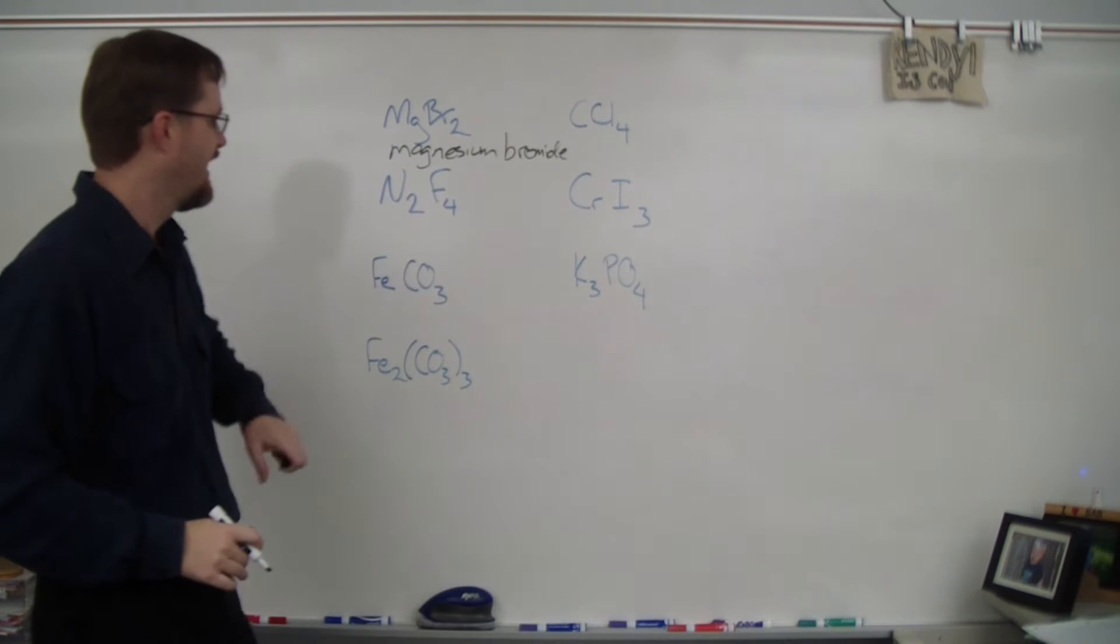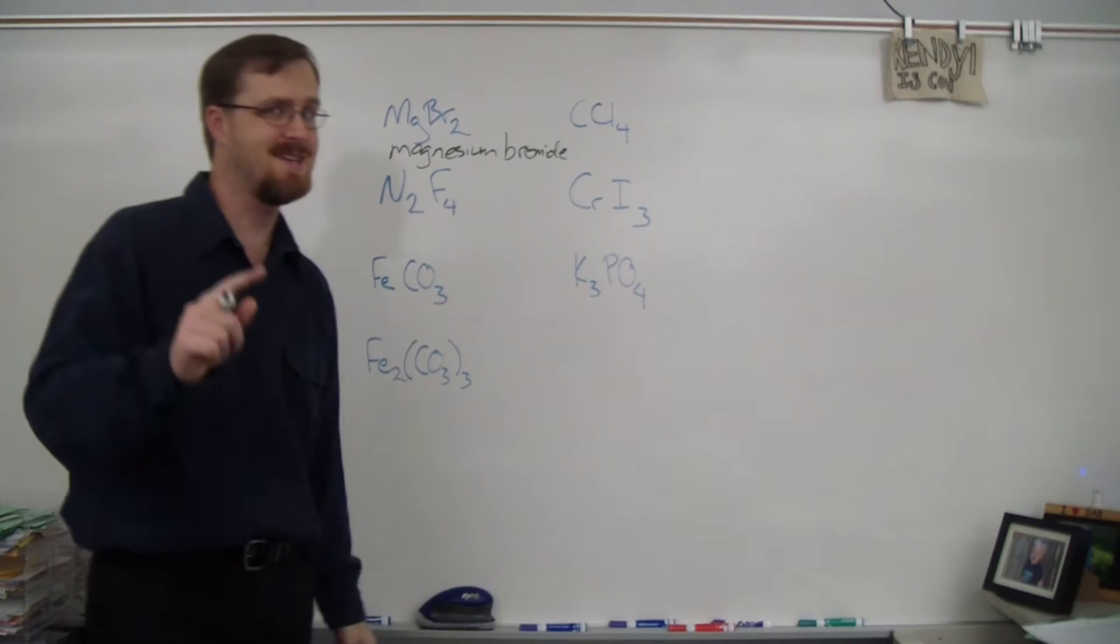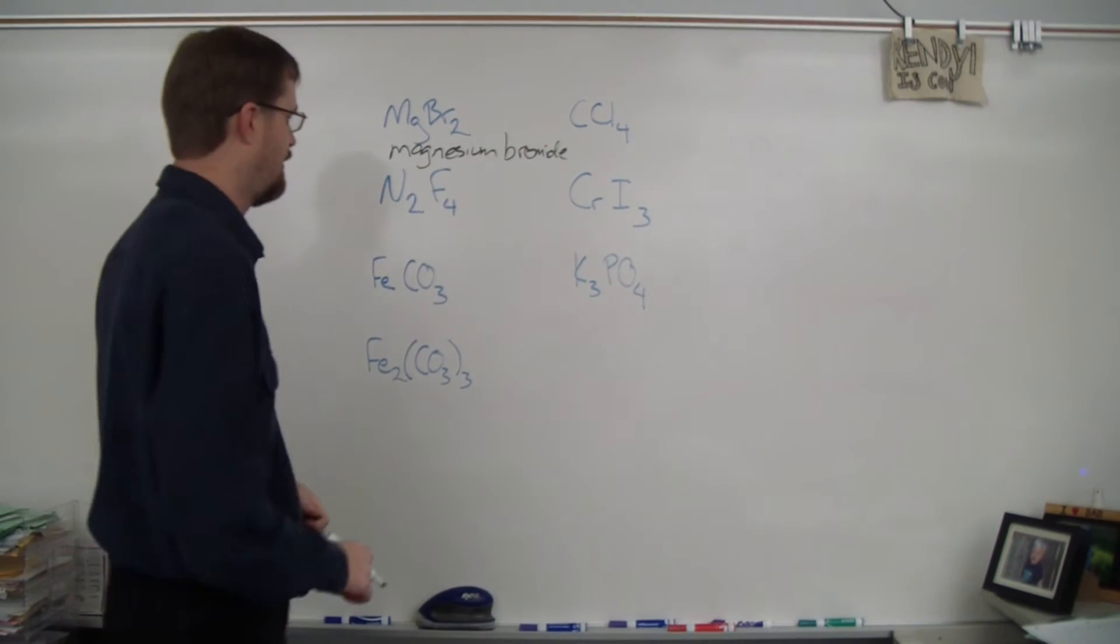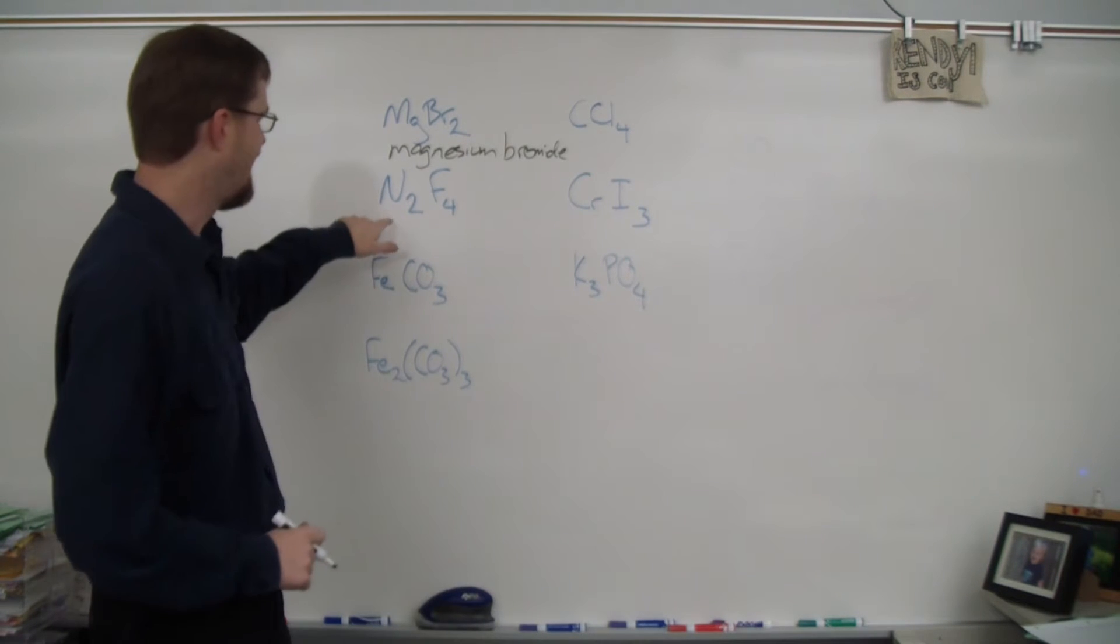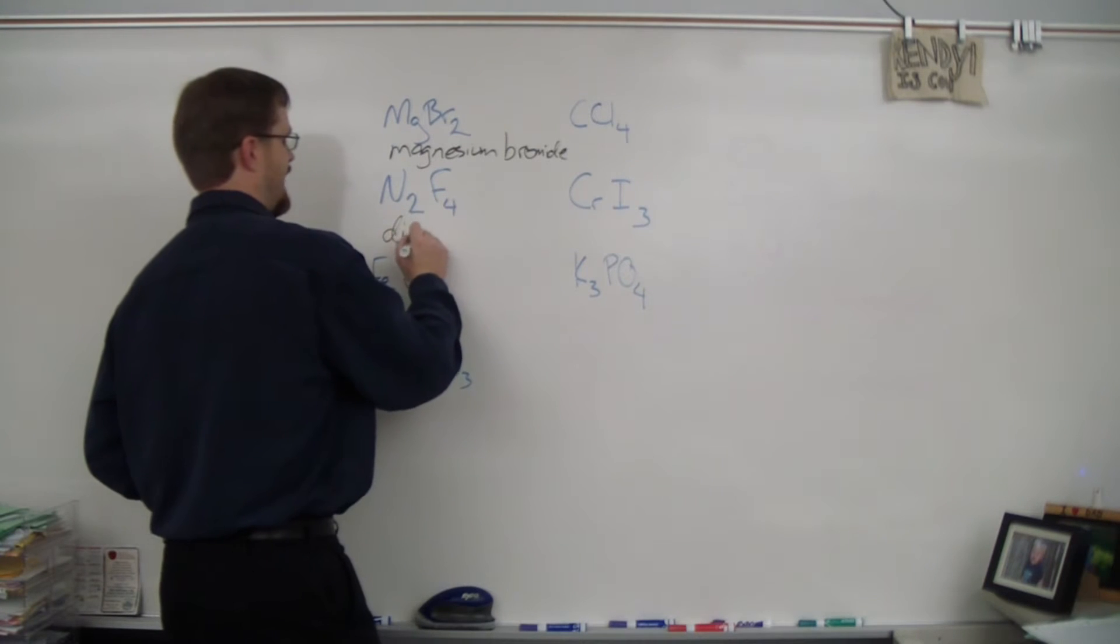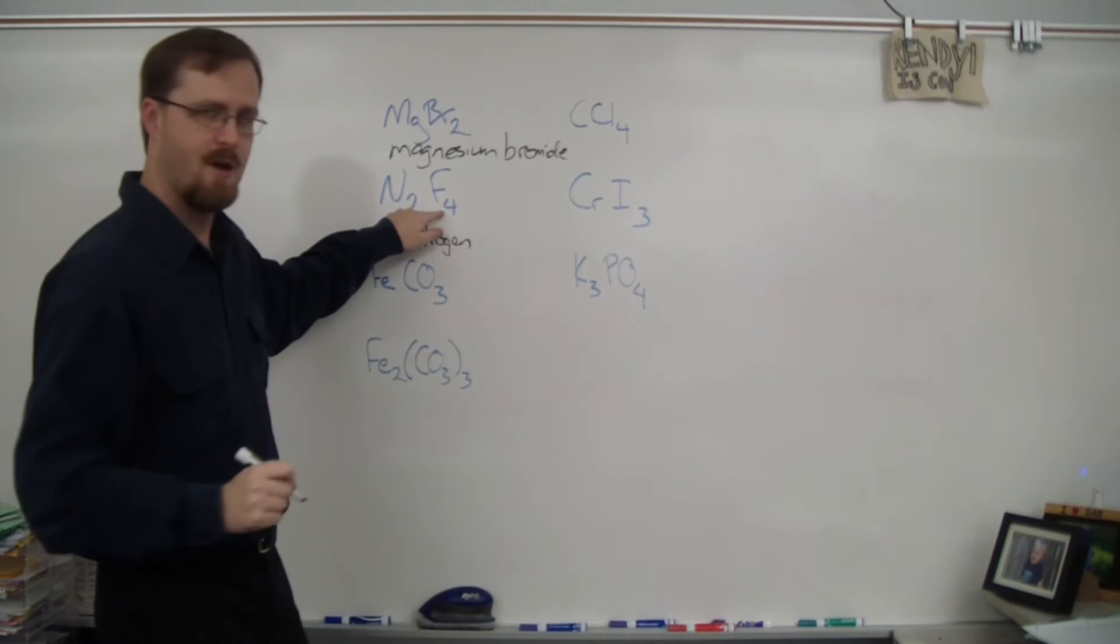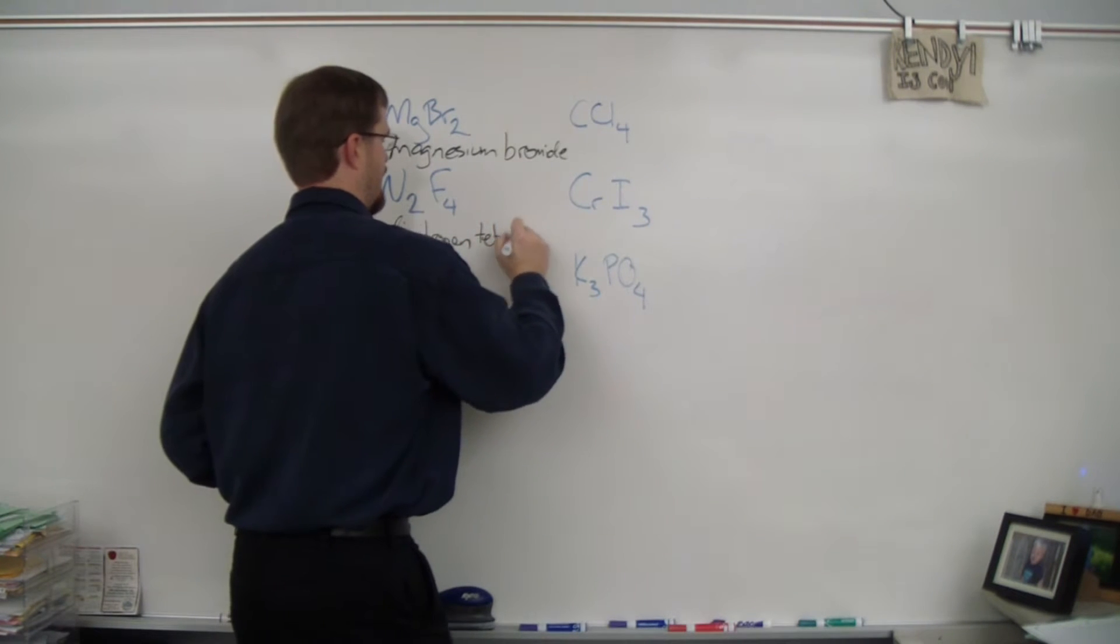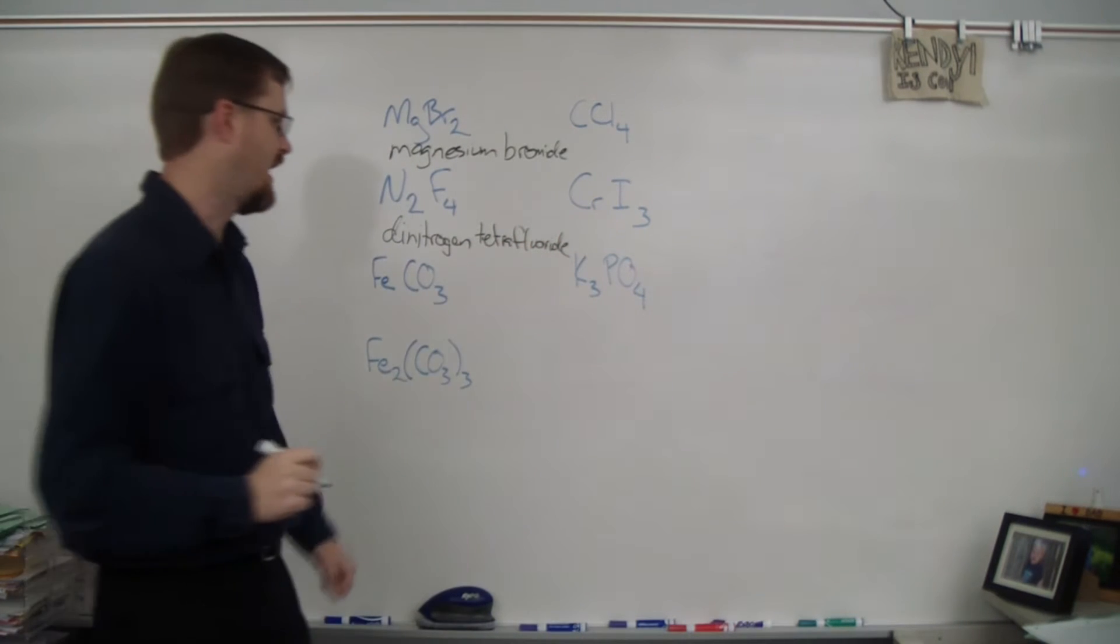Alright, next one. N2F4. Is the first element a metal? Well, N is nitrogen, which is a non-metal, so therefore this is a covalent compound. And here we're going to use, that's right, prefixes. Alright, so since our subscript here is 2, that means di. So we're going to do dinitrogen. And then 4 is tetra. So tetrafluoride. Dinitrogen tetrafluoride.